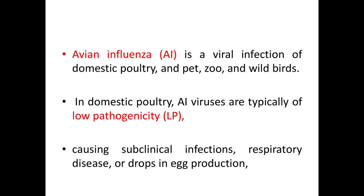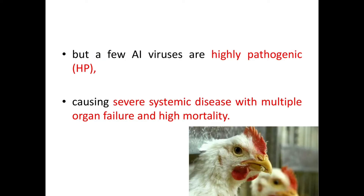Avian influenza is a viral infection of domestic poultry caused by orthomyxovirus, and it also infects pet, zoo, and wild birds. In domestic poultry, AI viruses are typically of low pathogenicity, called LP strains, causing subclinical infections, respiratory disease, or drops in egg production. There is another form called highly pathogenic, or HP, causing severe systemic disease even in the absence of secondary infections, leading to multiple organ failure and high mortality.